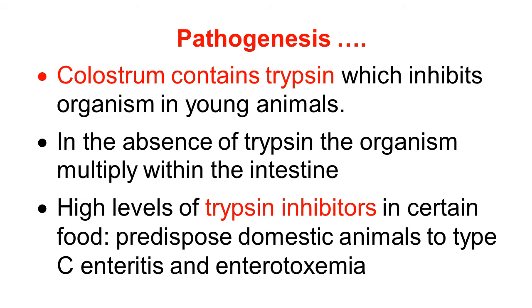Thus trypsin is an important factor regarding beta-toxin. Colostrum contains trypsin inhibitors, which inhibits organisms in the young animal, so trypsin not only inhibits the organism but also destroys the beta-toxin. In the absence of trypsin, the organism multiplies within the intestine. High levels of trypsin inhibitor in certain feeds also predispose domestic animals to type C enteritis and beta-toxin production.